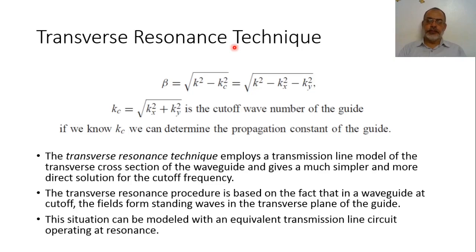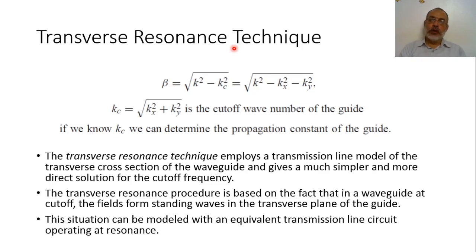We have already studied the analysis of closed waveguides like rectangular waveguide and circular waveguide. In these waveguides, we start with solving the wave equation for the longitudinal field component. From solving this longitudinal wave equation, we obtain the solution for the longitudinal field component with some unknowns, and by applying the boundary conditions, we could obtain these unknowns. One of these unknowns is the cutoff wavenumber Kc.